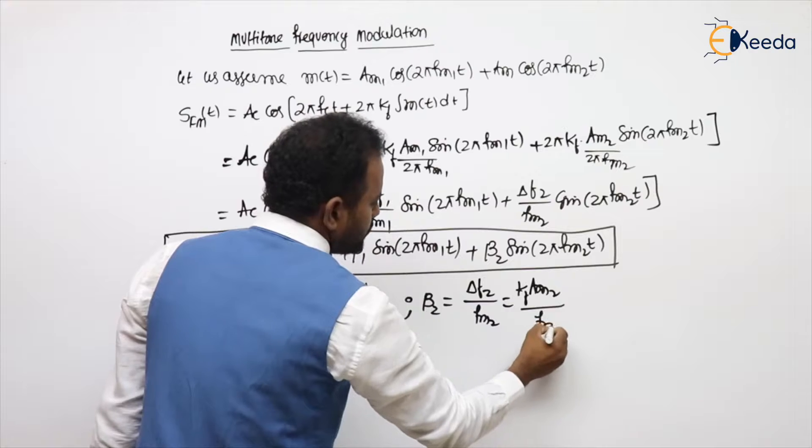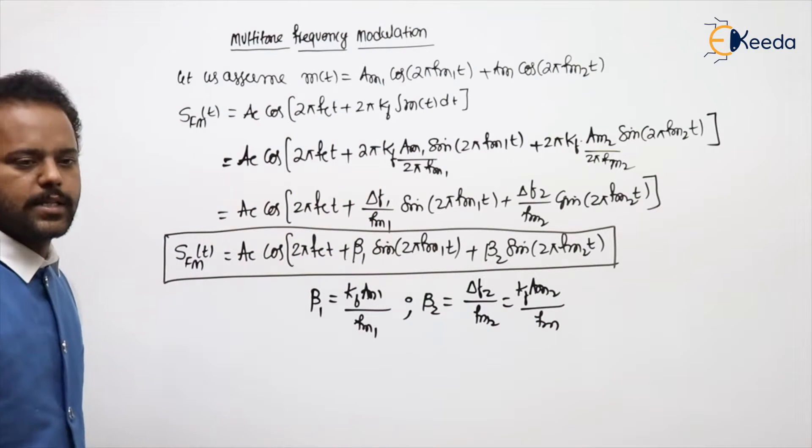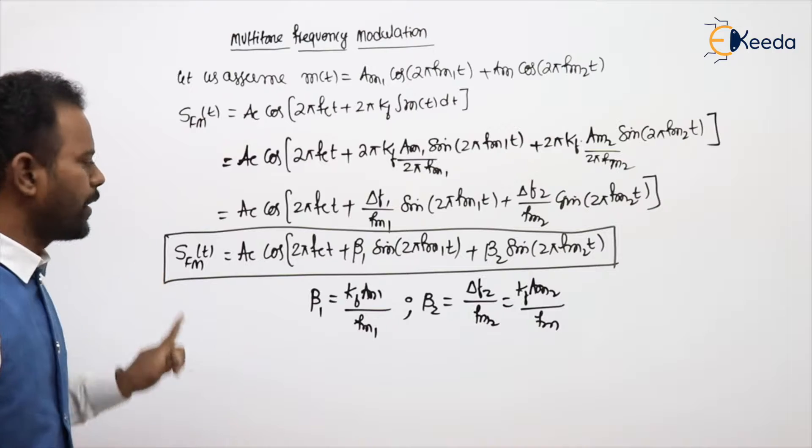What is β2? β2 is nothing but Δf2 by fm2 or kf Am2 by fm2. These are the modulation indexes. This is the expression for multi-tone FM.